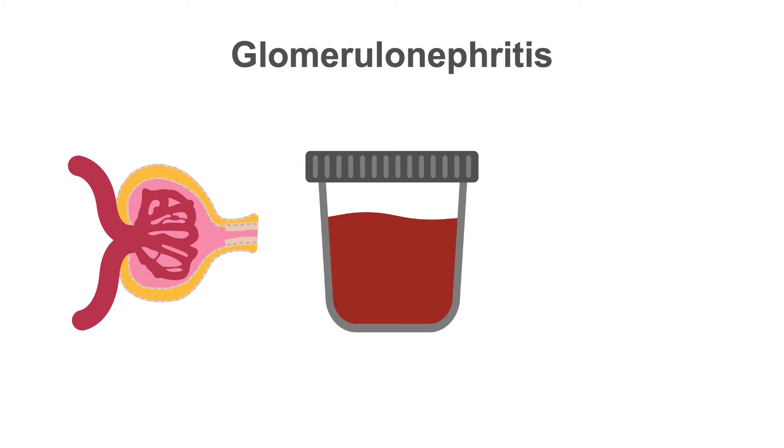Glomerular causes of hematuria are mostly due to glomerulonephritis which is inflammation and damage of the glomerulus. Glomerulonephritis is further subdivided into proliferative and non-proliferative glomerulonephritis.